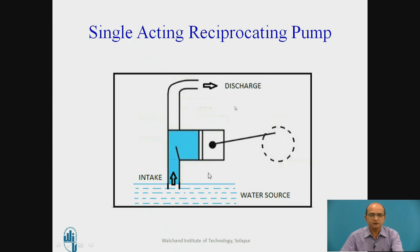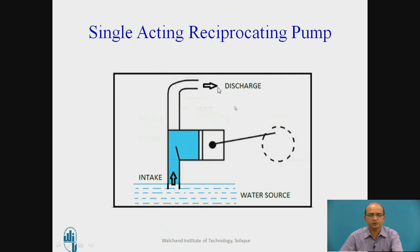But in this case, the principle is very simple. When the piston moves in the outward direction, there will be creation of vacuum, and due to that vacuum, the water from the sump or the storage tank rushes inside the cylinder. When the piston moves from the outer dead center towards the inner dead center, the inlet valve closes and the delivery valve opens, and the water rushes to the delivery pipe.